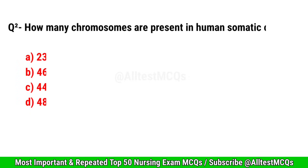Question No. 2. How many chromosomes are present in human somatic cells? Correct option is B. 46.